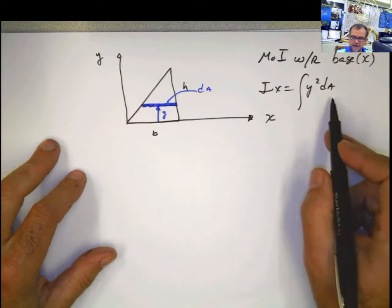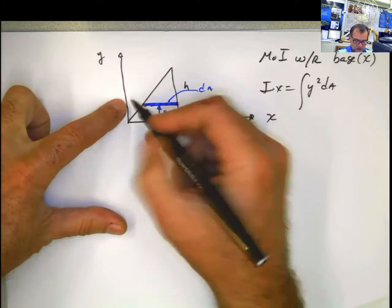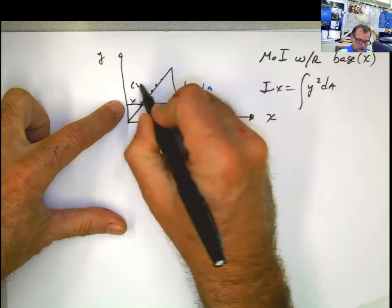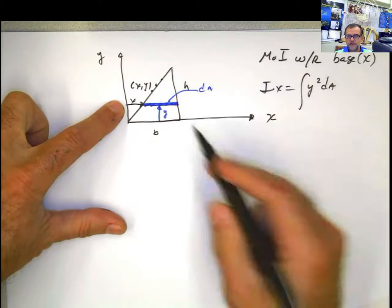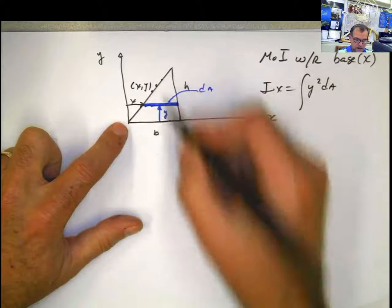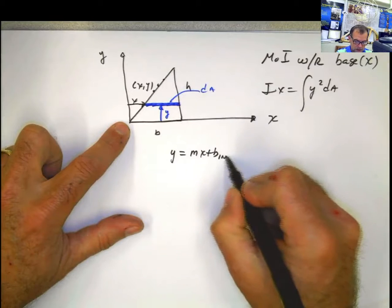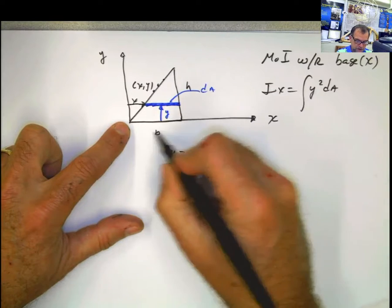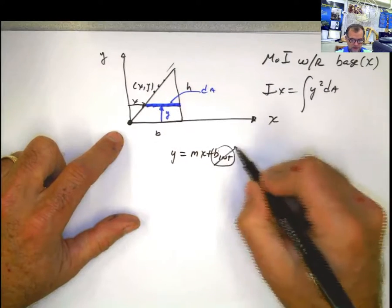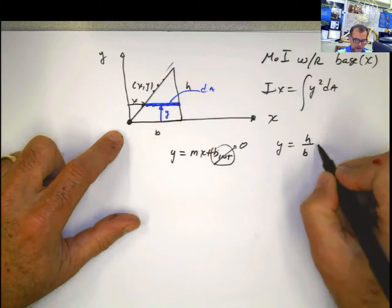If we apply the same reasoning we did before, this dA is going to be this total distance minus this small distance here, which is x because every point has coordinates x, y. It's easier to figure out the equation of this straight line: y equals mx plus b, where b is the y-intercept. The y-intercept for this equation is 0, and the slope is h divided by b. So y equals h divided by b times x.